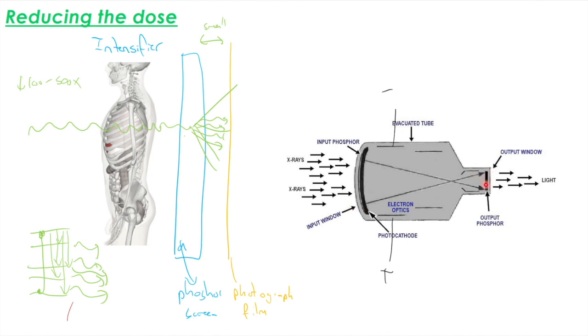And then exactly the same principle happens again. Where these electrons are striking a phosphorus plate, it produces a load of light through the same photonic emission that we talked about earlier.